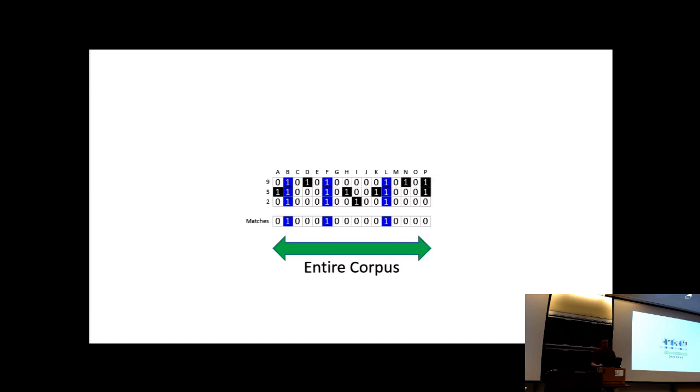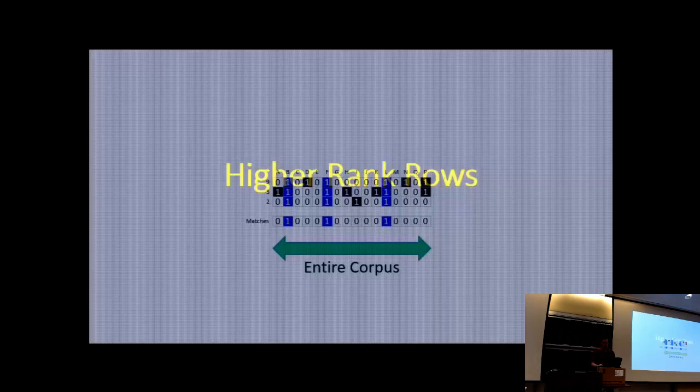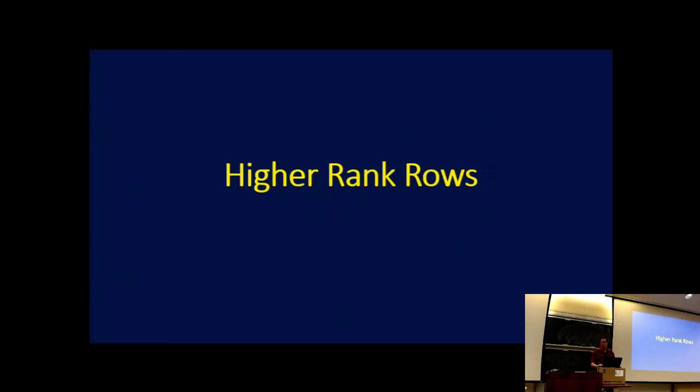This brings us to the first BitFunnel innovation. It's a generalization of blocked signatures that we call higher-rank rows. A higher-rank row is just a shorter, lower-resolution version of a row, and it can be scanned more quickly, but the catch is it creates more false positives. So let's take a look.